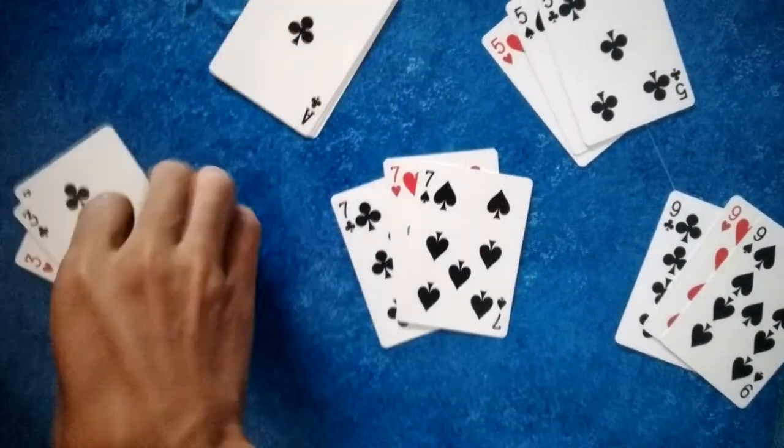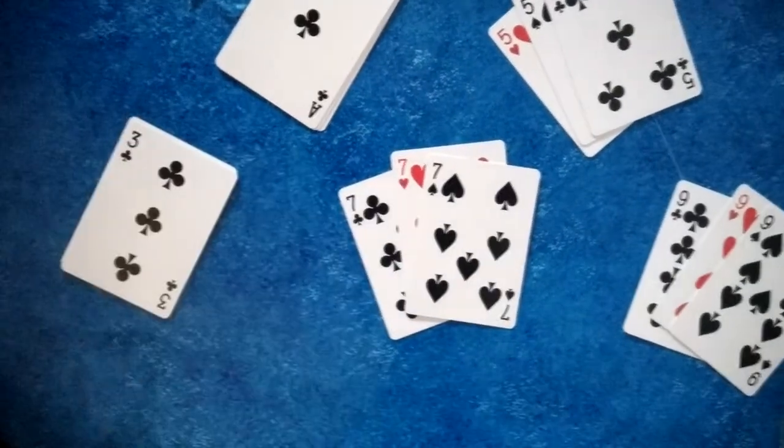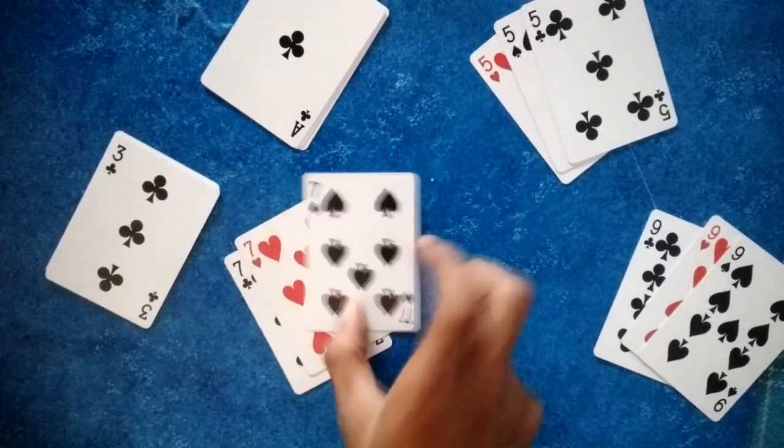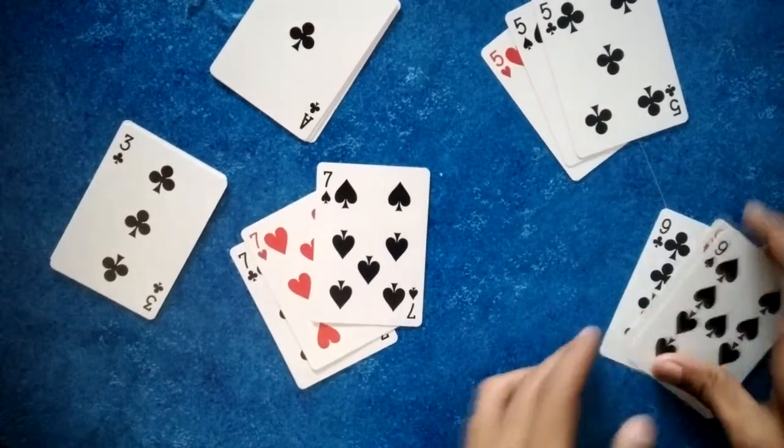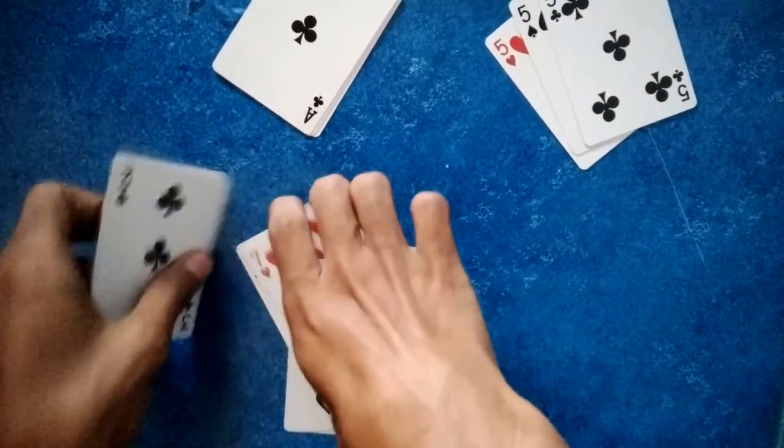ace of hearts and ace of spades, 3 of clubs, 3 of hearts, 3 of spades, and the same for the 7, the 9, and the 5. So the special thing about these cards is,